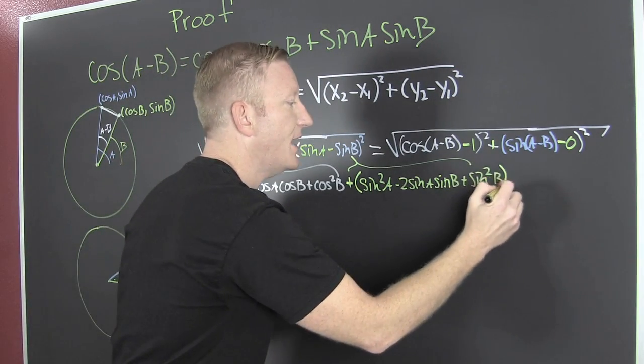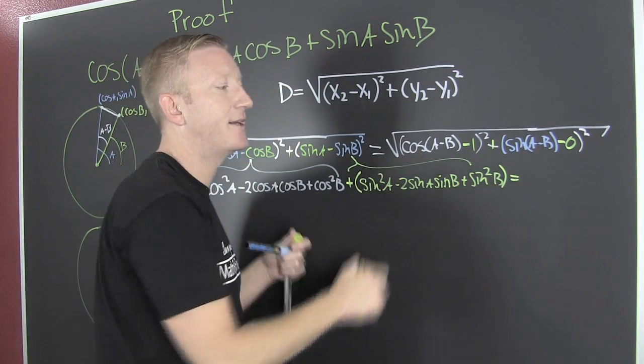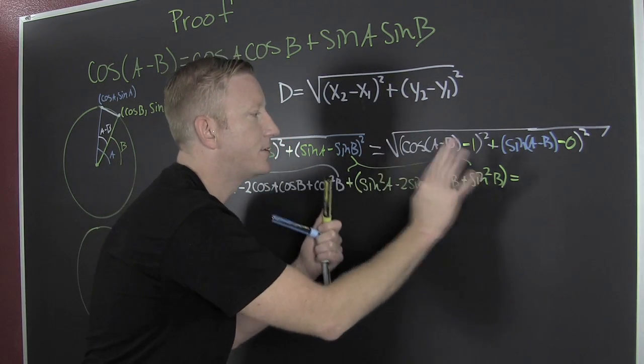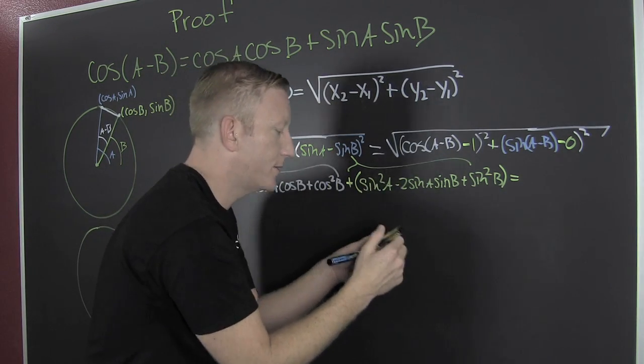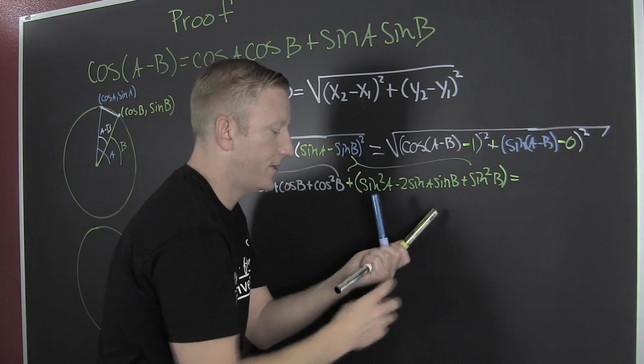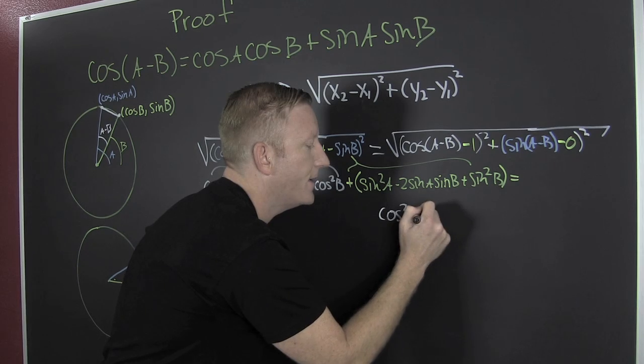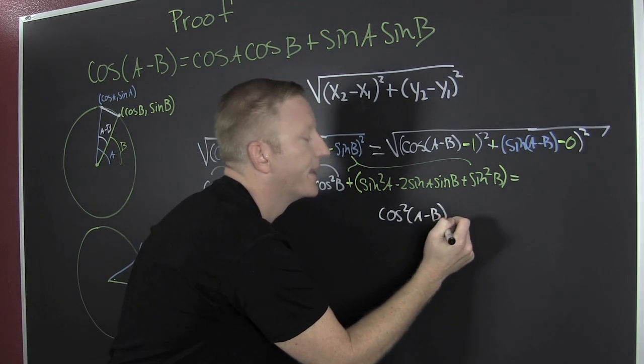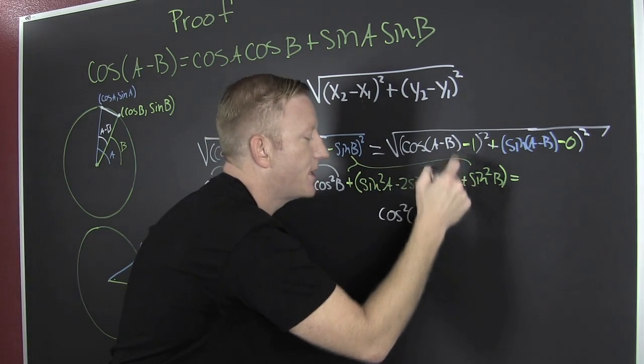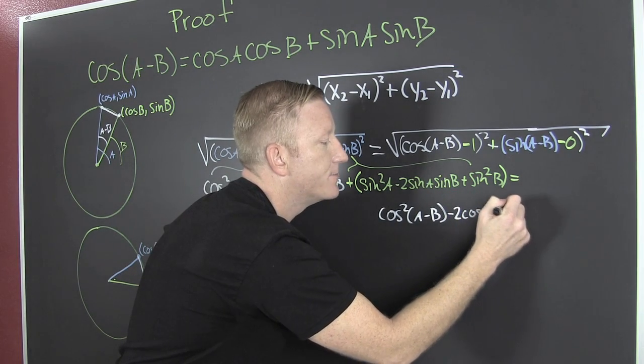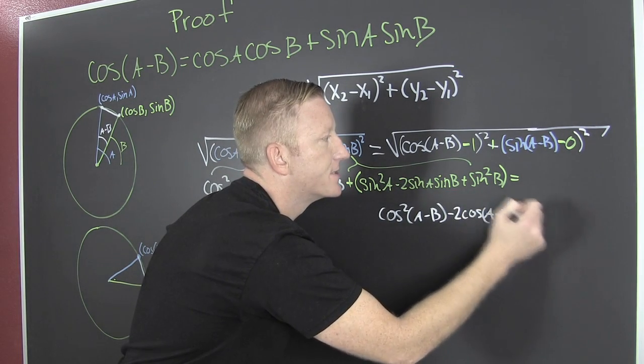And then that's going to be equal to—I think I've run out of room. So I'm going to put that right here. So then that's that. And when I square that, I'm going to get the cosine squared A minus B, this one times that one, double it, minus two times the cosine of A minus B plus one.